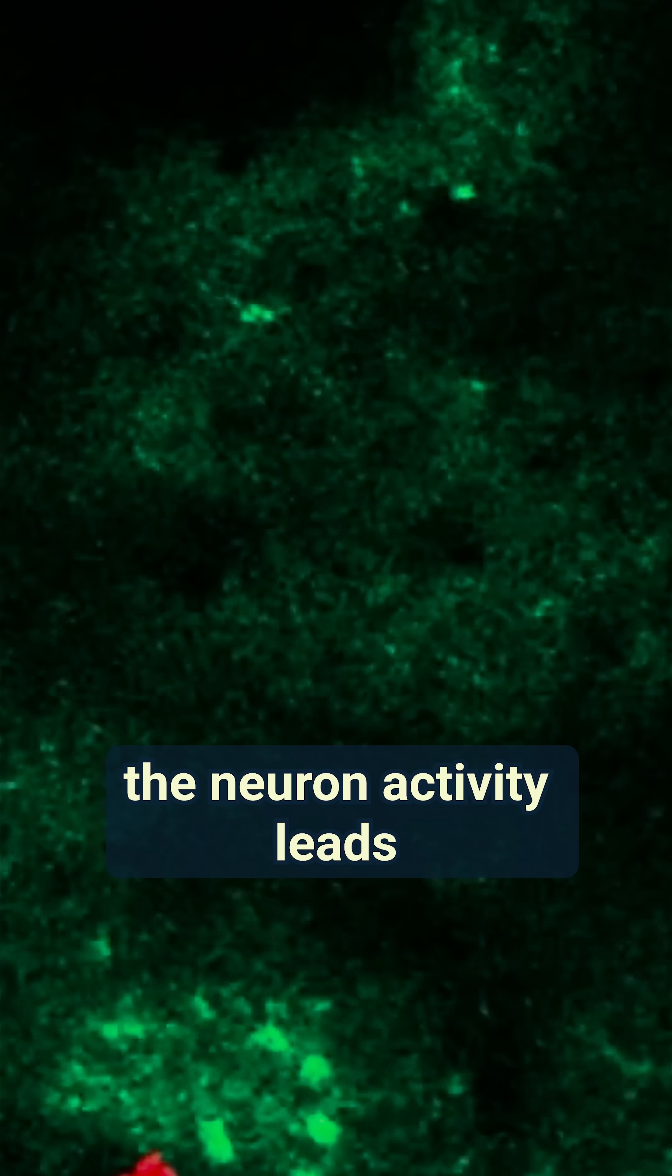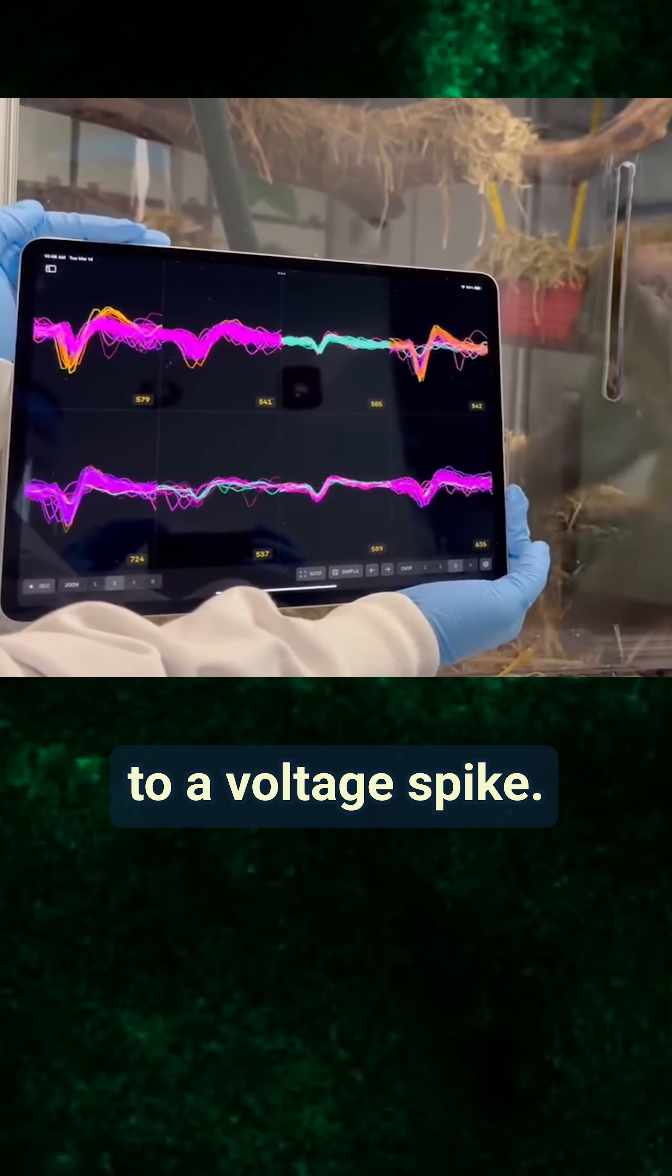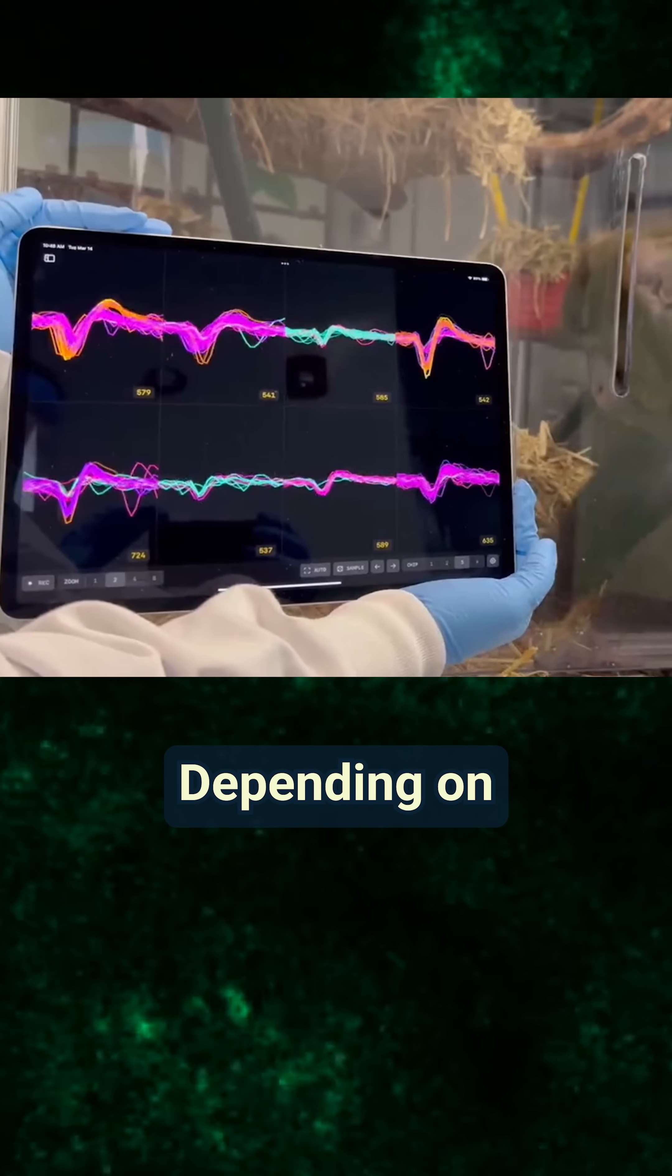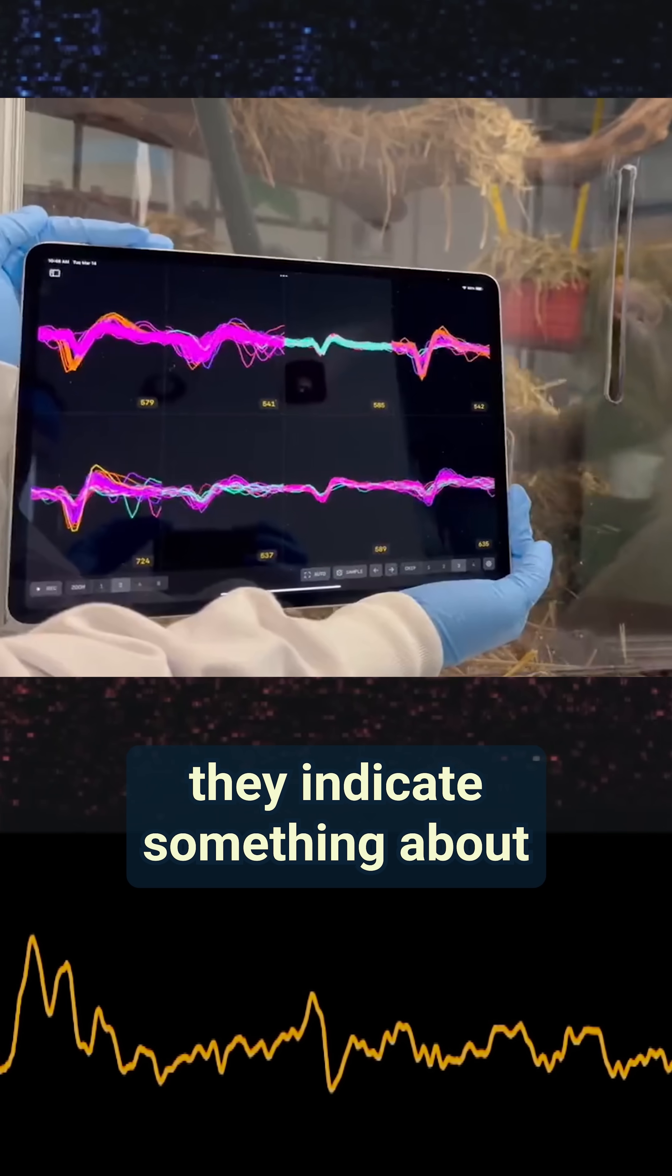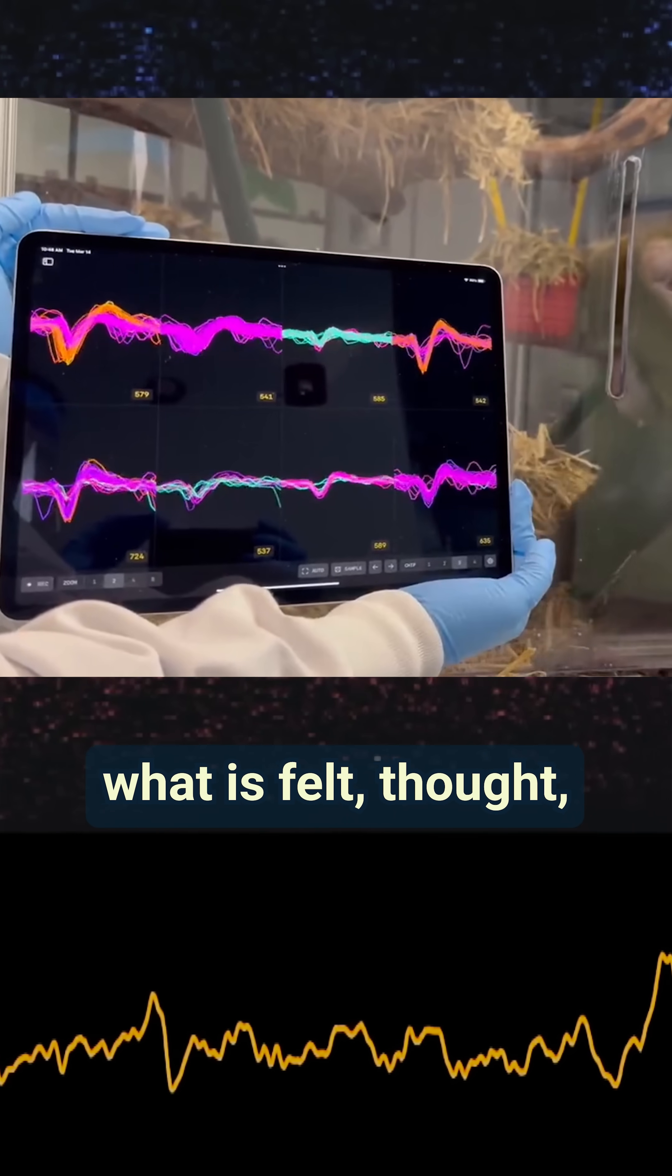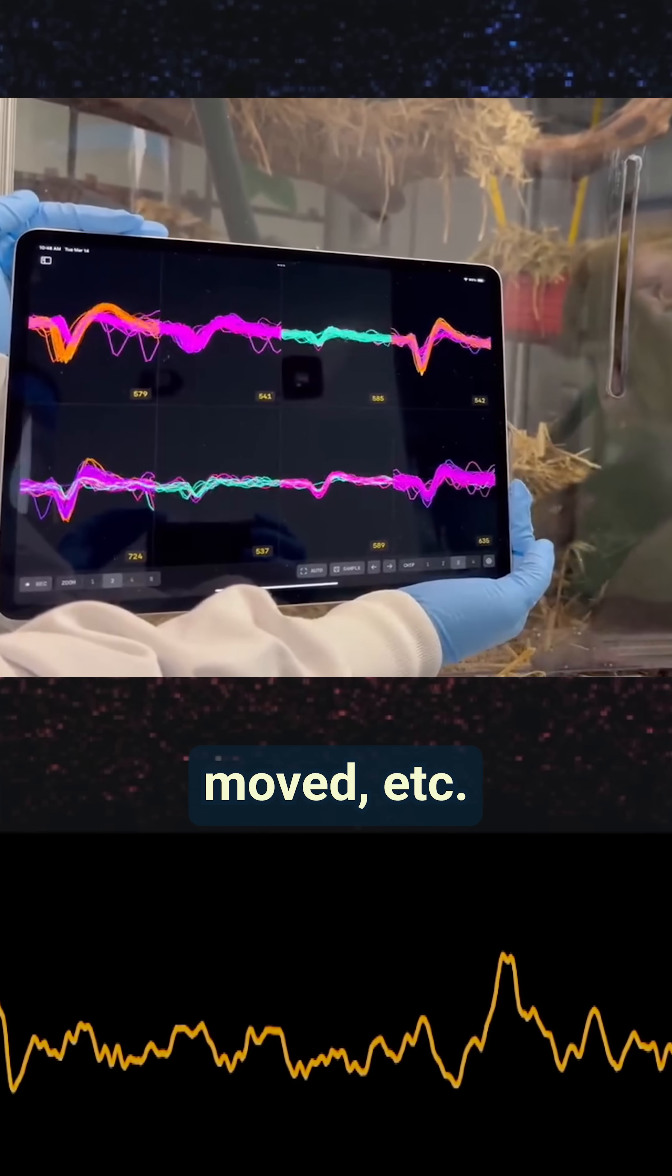Neuralink cares about times the neuron activity leads to a voltage spike. These spikes are informative. Depending on where they are in the brain, they indicate something about what is felt, thought, seen, heard, smelt, moved, etc.